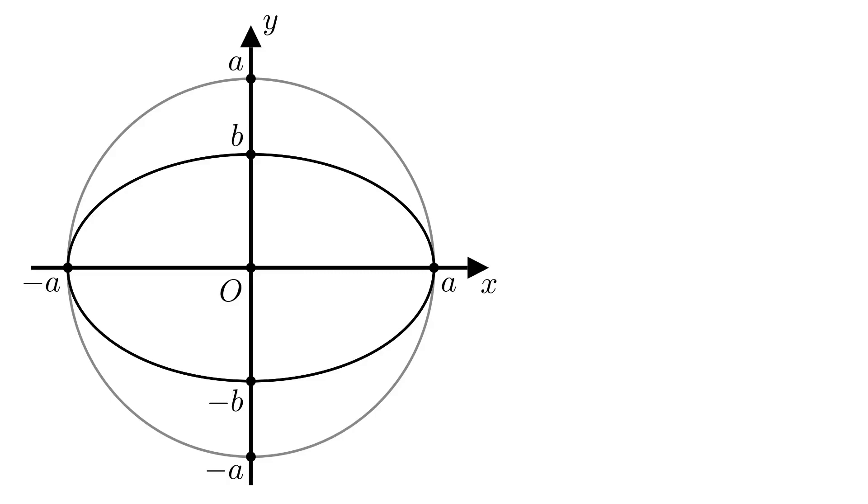We shrank the circle in the y direction in such a way that this line segment of length a transformed into this line segment of length b, which means that b over a is the scale factor in the y direction.